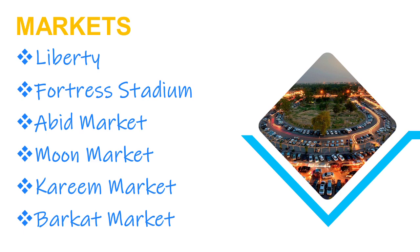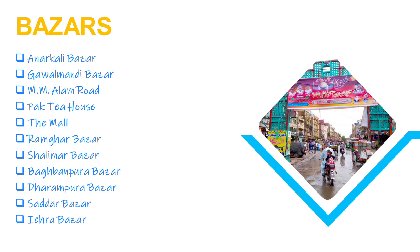The famous bazaars of Lahore are: number one, Anarkali Bazaar — named after Mughal emperor Shahzada Salim's lover Anarkali; number two, Gawalmandi Bazaar, a famous food street where you can taste every type of food, especially traditional Lahori food; number three, MM Alam Road; number four, Park Tea House; number five, The Mall; number six, Ramgali Bazaar; number seven, Shalimar Bazaar; number eight, Baghbanpura Bazaar; number nine, Dharampura Bazaar; number ten, Sadar Bazaar; and number eleven, Ichra Bazaar — local bazaars where you can find every type of goods.